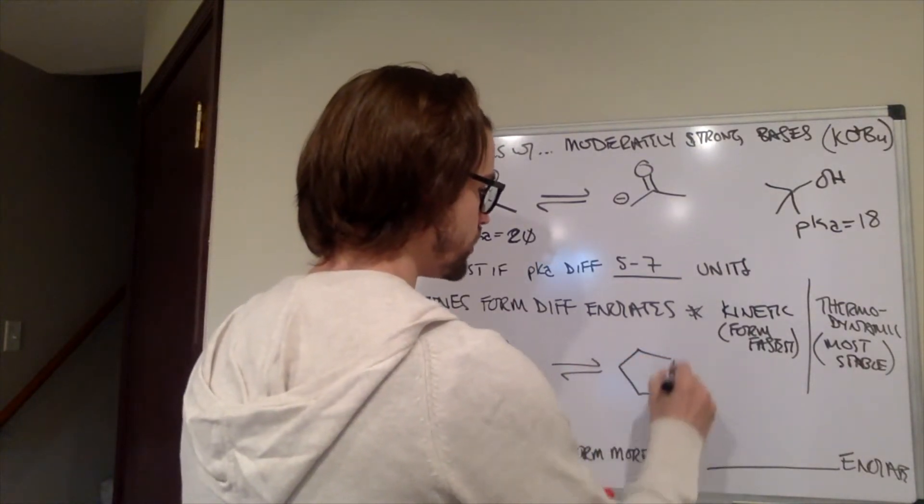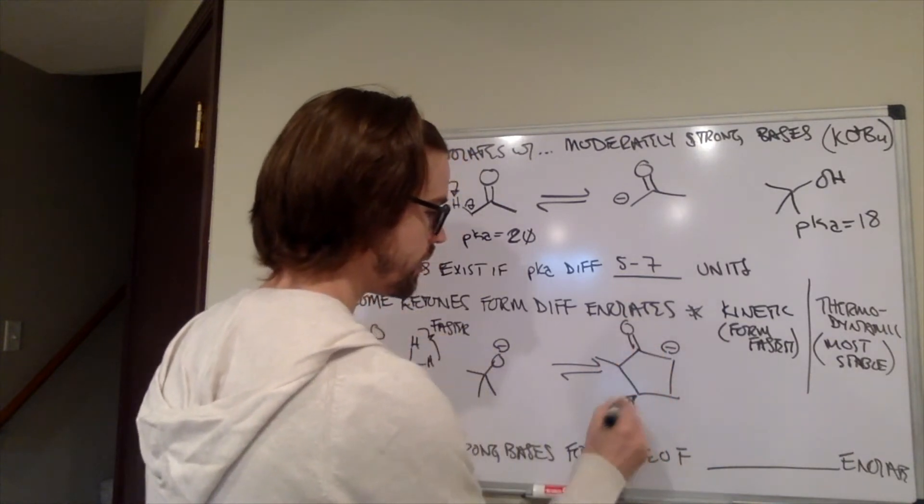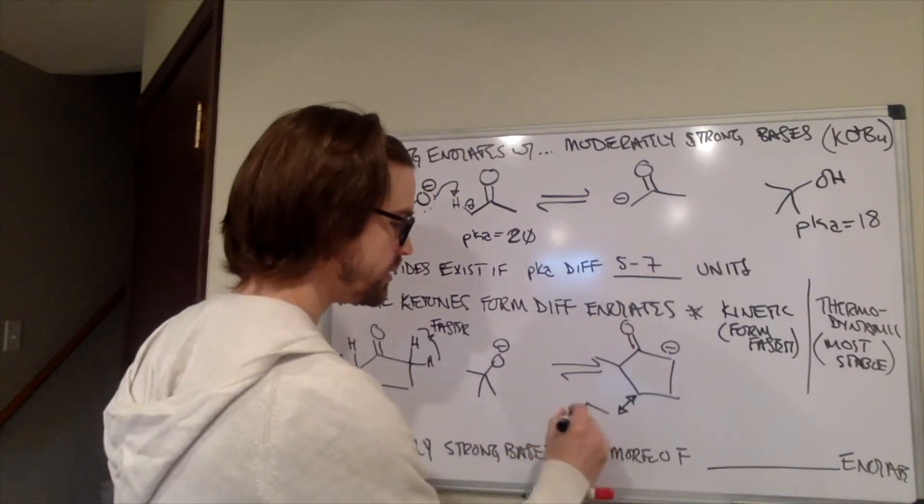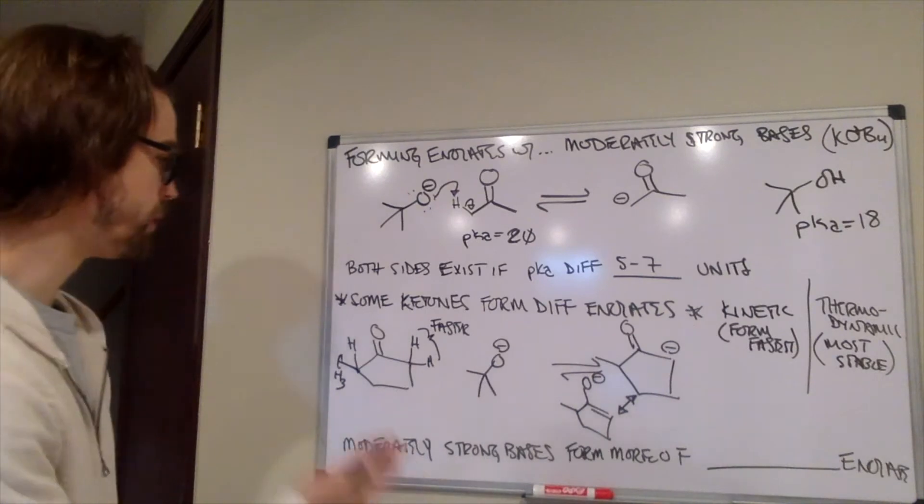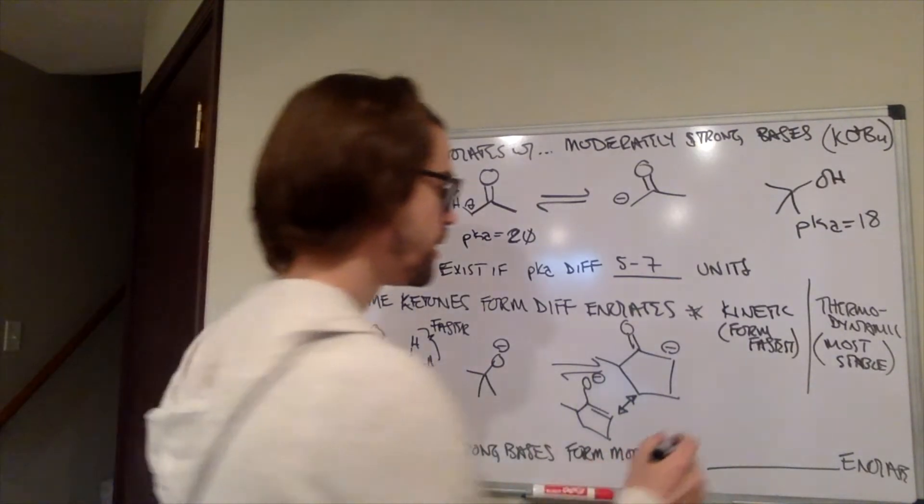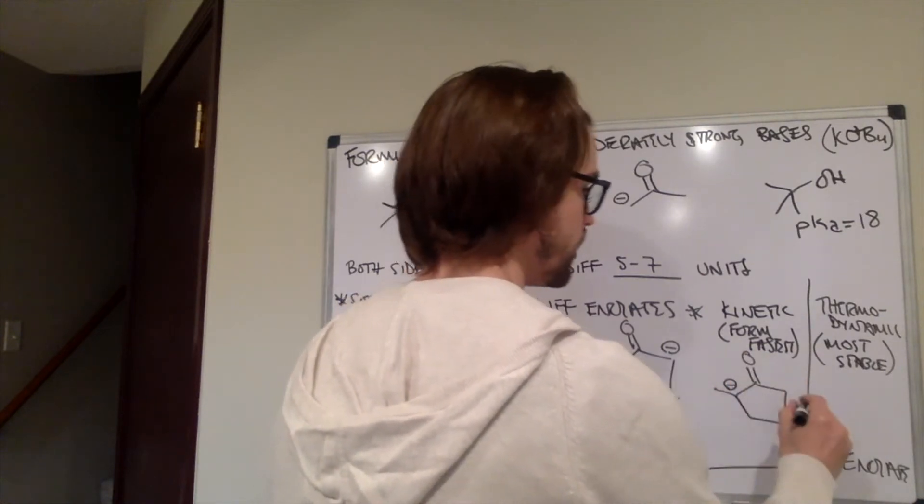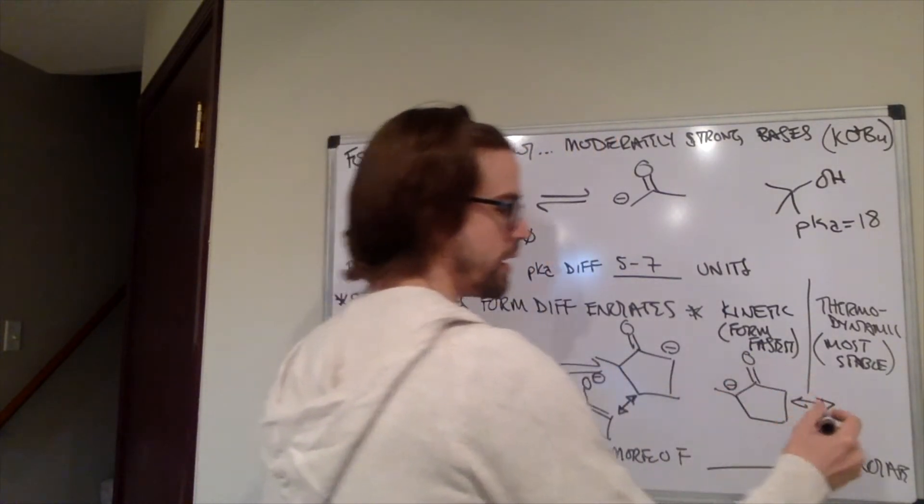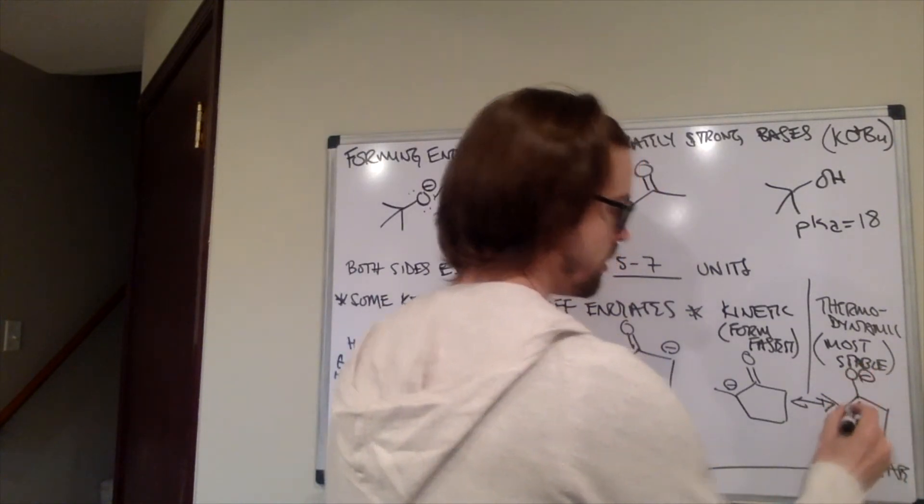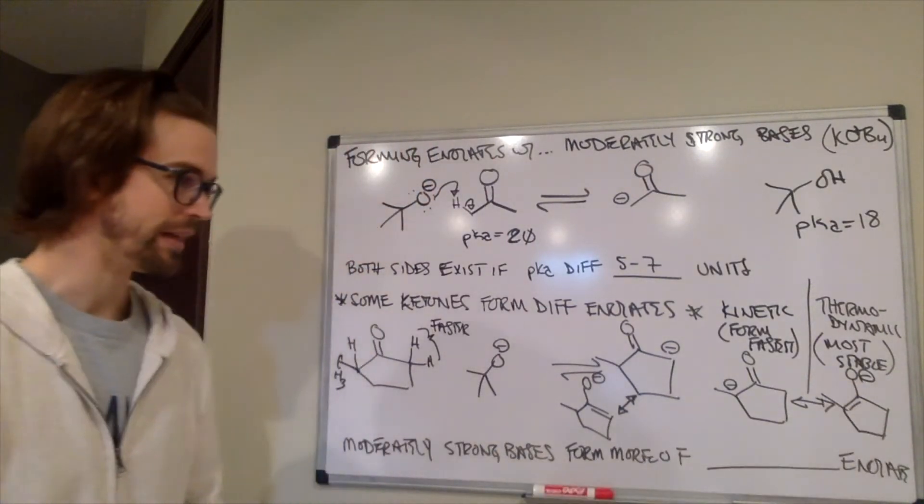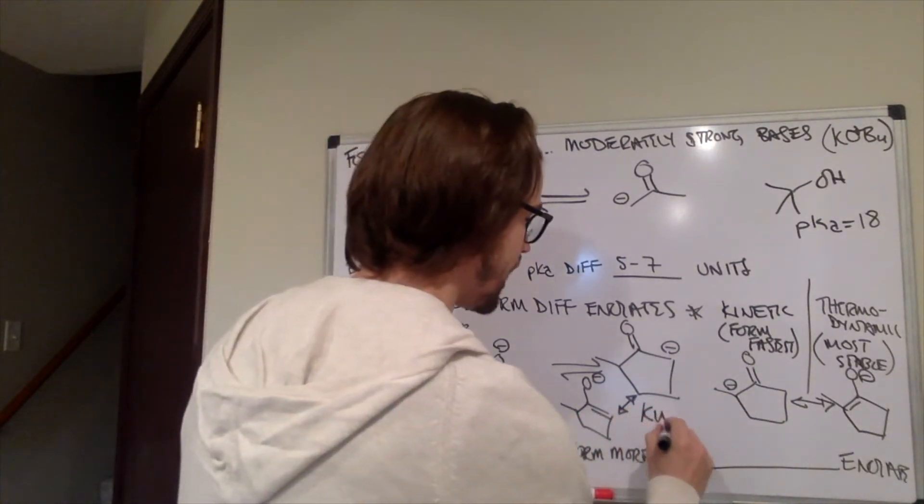So, if we were to make that enolate, it would look something like this. And again, why is that so stable? It's because the negative charge isn't just there, but it's also on the oxygen. If we deprotonated the other side, we would form negative charge there that is also delocalized onto that oxygen. So, that would be what that enolate looks like. We already talked about this would be the faster deprotonation, so we know that this is the kinetic enolate.